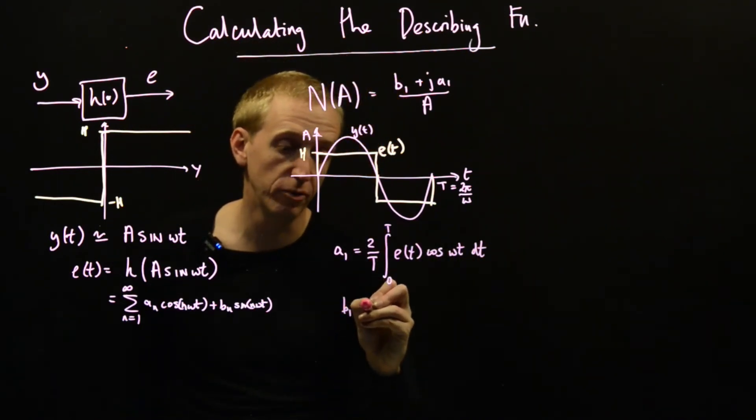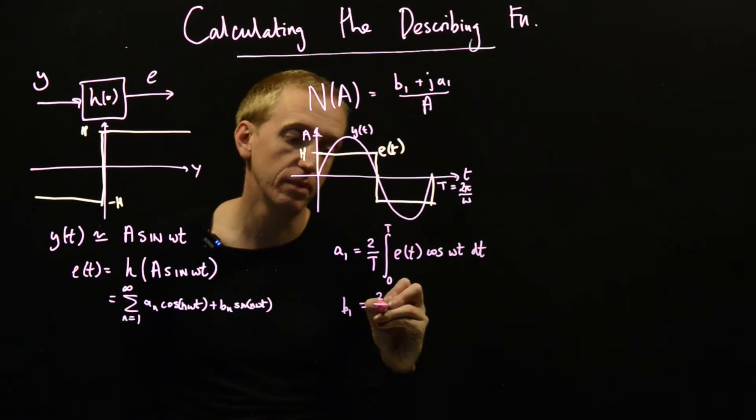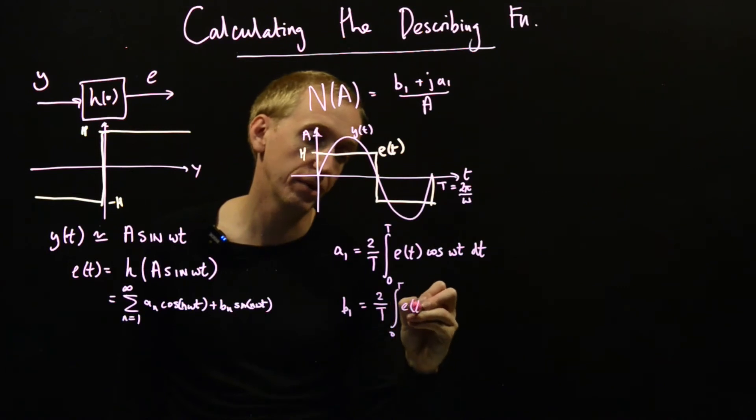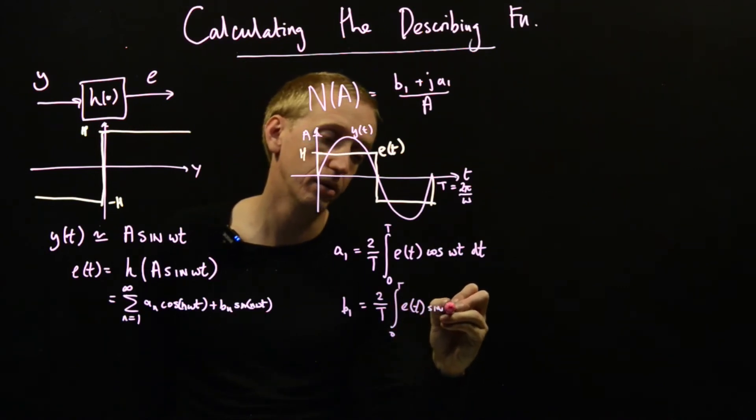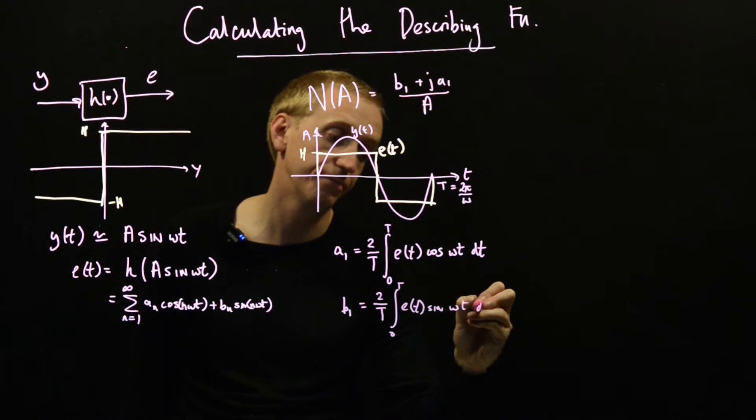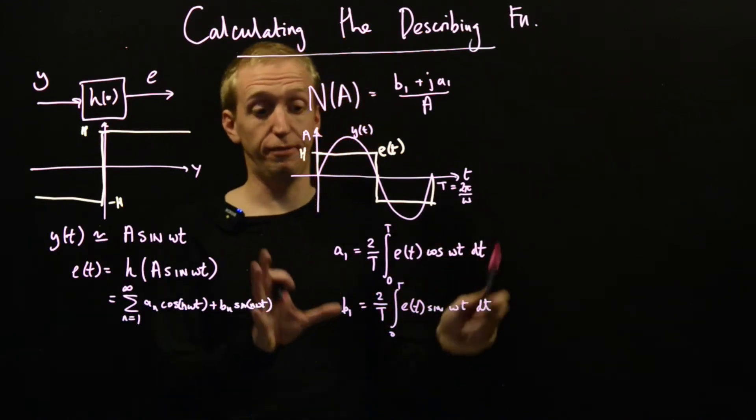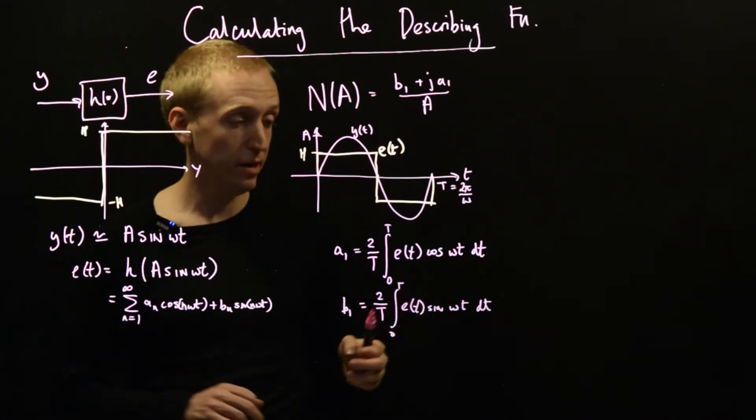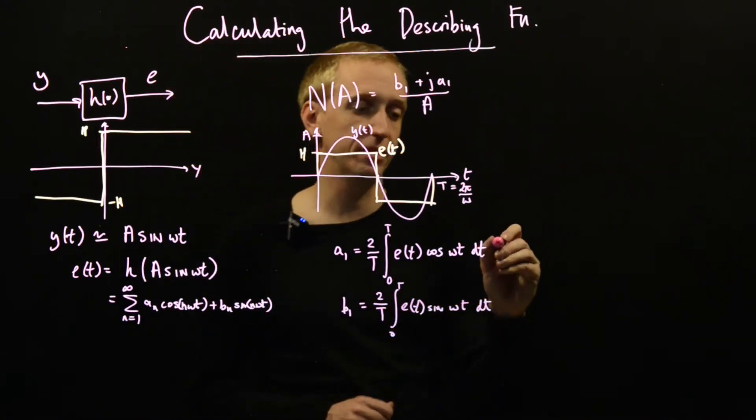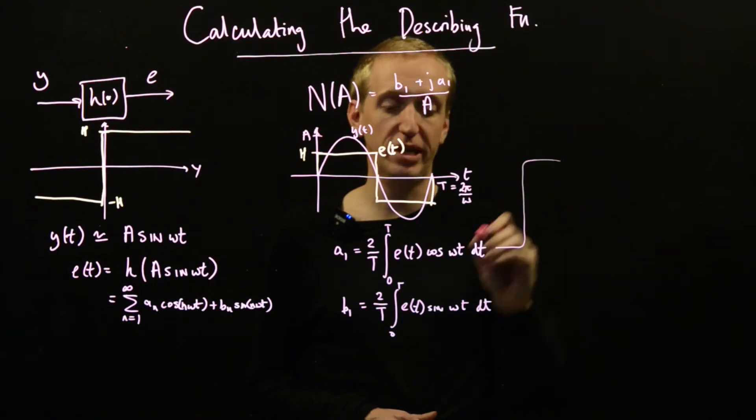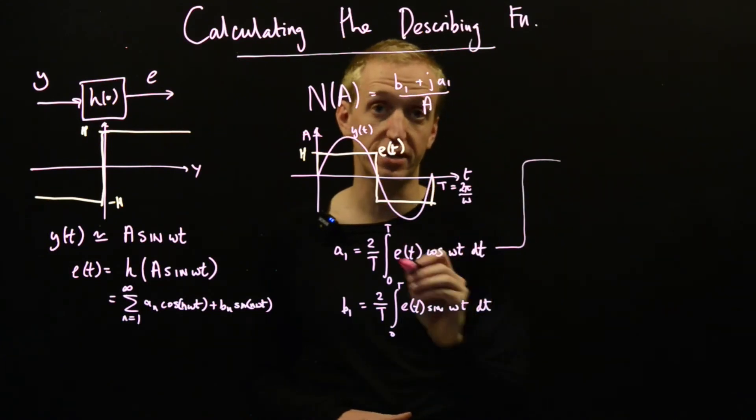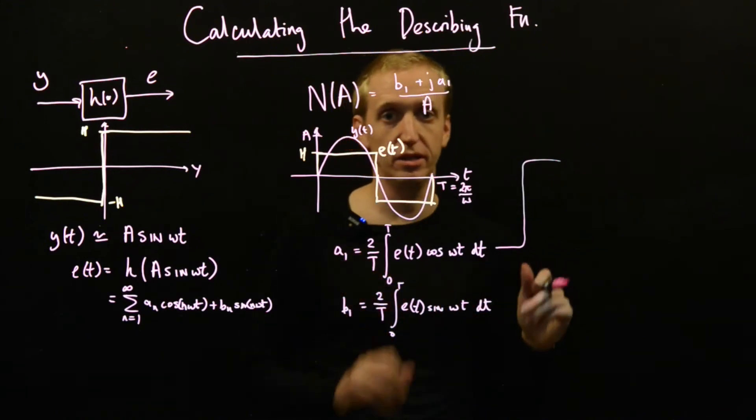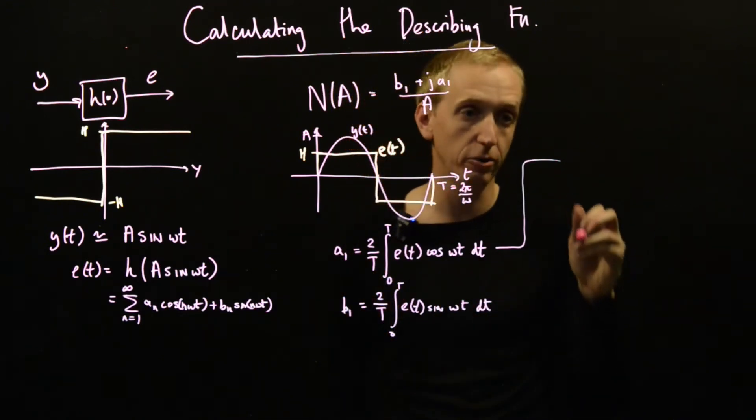And the formula for b₁ is similar. You just replace the cos with a sin(ωt) dt. And to finish things off, we just need to actually evaluate these integrals. But maybe before we do that, it might help to, well, we need to work out what this function here is, because this is the thing that we've got to integrate. And maybe it will help to build just a little quick graphical picture for what is going on.